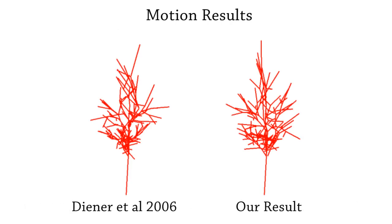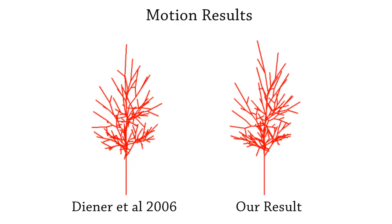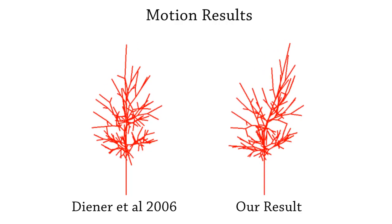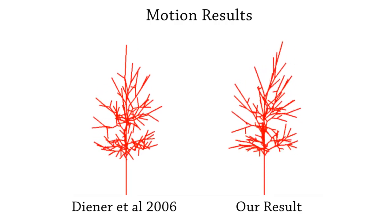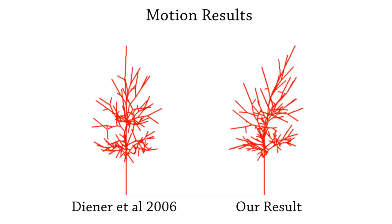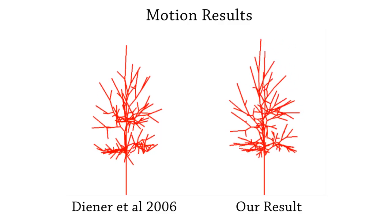Dina et al. constrained the motion into 2D, so they cannot model 3D movement. This is more apparent from the side view. In comparison, our method is able to change the depth of the tree.